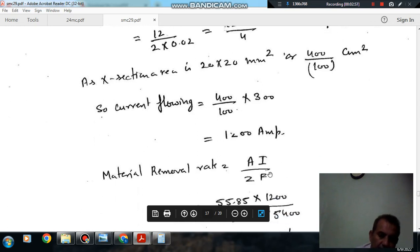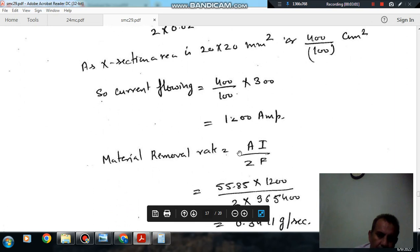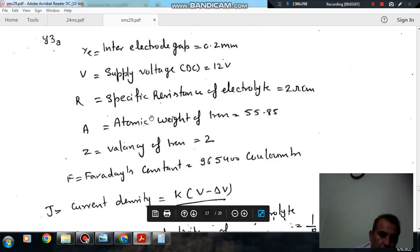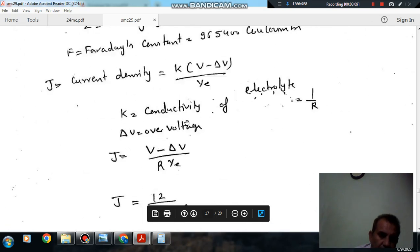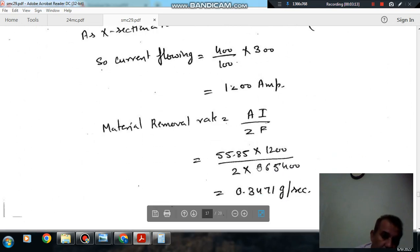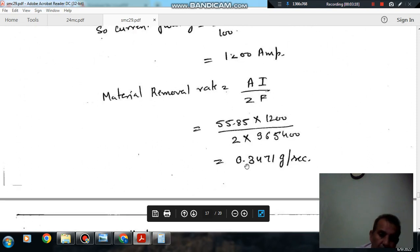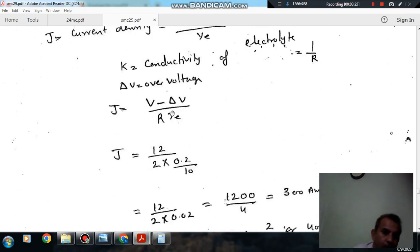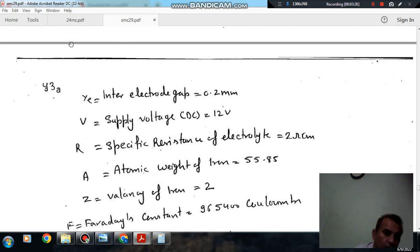So now metal removal rate is A by Z times I by F. Now A is your atomic weight that is 55.85 and Z is your valency. I is your 1200 and F is 96540. So metal removal rate is 0.3471 gram per second. So answer is option A.